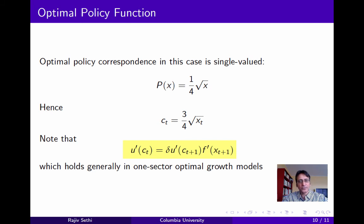And this holds generally in one-sector optimal growth models, and has a very natural economic interpretation. On the left-hand side, we have the utility loss that you would experience if you cut your consumption today by a small amount, and transferred it to the next period. And the right-hand side tells you the discounted value of the utility gain that you experience, if you consumed the extra production that would result from this transfer of resources from the current period to the next. Now it's very natural that this should be a necessary condition for optimality, because if it didn't hold, then you could increase your payoff by transferring resources across time, either from today to tomorrow, or the reverse.